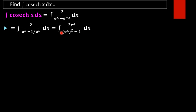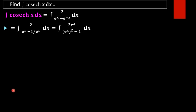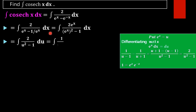This function is not in an integrable form. To make it integrable we use integration by substitution, letting e^x equal to u. Differentiating with respect to x gives e^x dx equal to du, so e^x dx becomes du and the denominator becomes u squared minus 1.